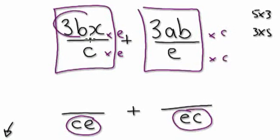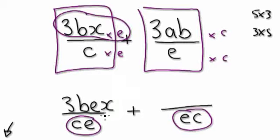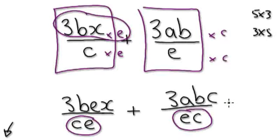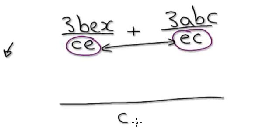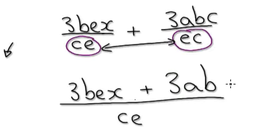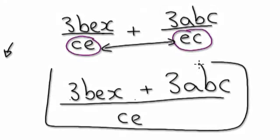At the top here it would be 3BX. Times these two together, it would be 3BEX. I'm just trying to keep it alphabetical. Here, it's going to be 3ABC. Now that the two denominators are the same, we can merge. So it would be CE, or EC — it doesn't matter — and the numerator is 3BEX plus 3ABC. There, you just merged two fractions.